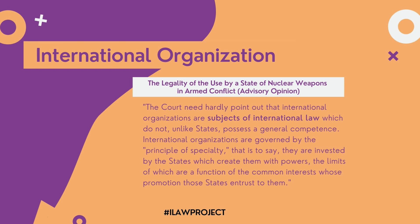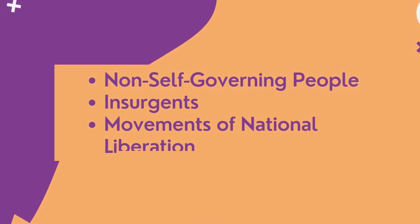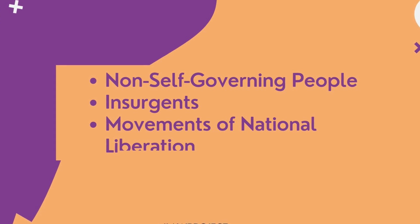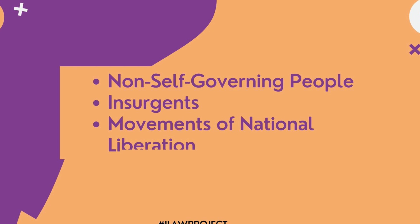Another curious subject of international law includes non-self-governing peoples, insurgents, and movements of national liberation. This is a somewhat unusual categorization. Under international law, representation is generally on a nation-state basis, implying that for there to be representation, there must be a recognized de facto and de jure government. But with non-self-governing peoples, insurgent groups, and movements of national liberation, this combination is lacking, meaning there is no representation of a people as a nation.